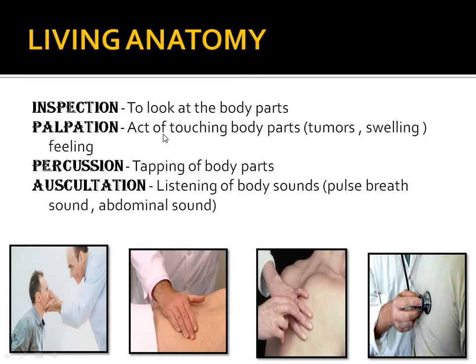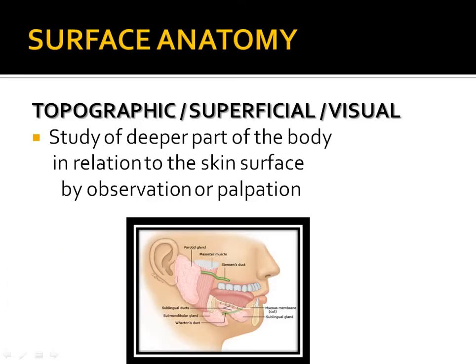Percussion means tapping of body parts — for example, percussion is done in the lung field. Auscultation means listening to body sounds such as pulse rate, breath sounds, and abdomen sounds. Surface anatomy, also called topographic or superficial anatomy, is the study of deeper parts of the body in relation to the skin surface by observation or palpation.